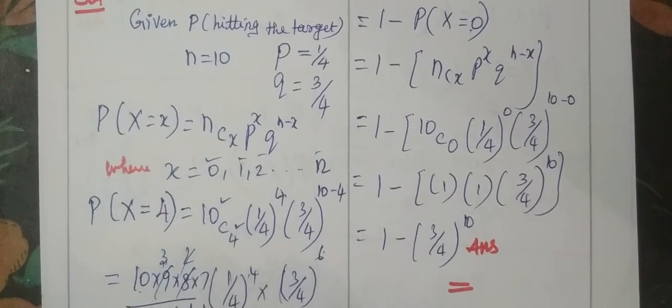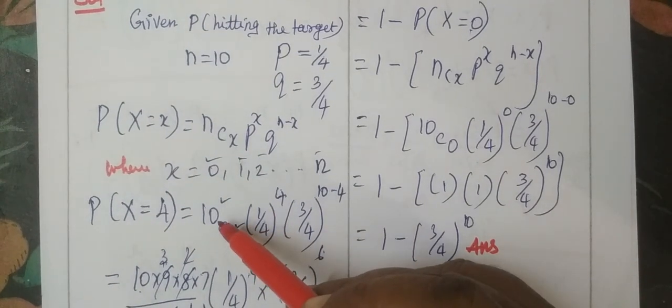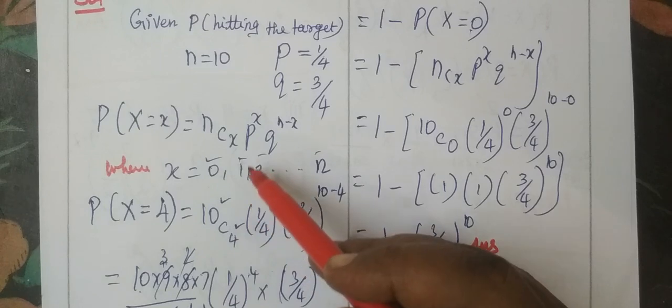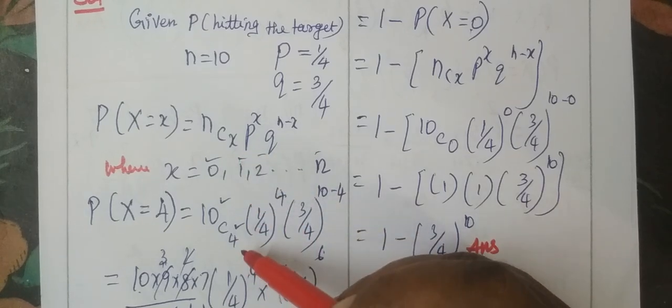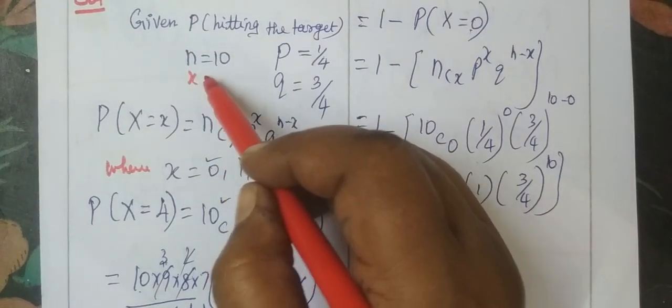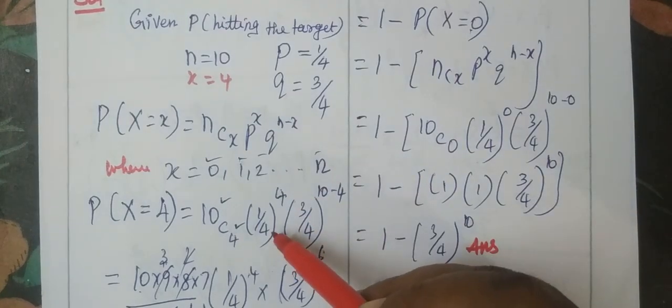P of X equals 4. We substitute n equals 10. Because it is given X equals 4, here X equals 4, then p to the power x.